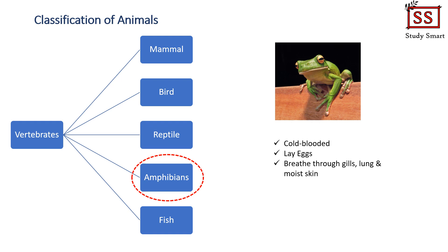Here we come to the last vertebrate type: amphibians. The most common example of amphibians is the frog. Most students tend to confuse amphibians and reptiles — I hope with the smart tip for reptiles, that confusion is now cleared up. Frogs are cold-blooded and they lay eggs. Their breathing method is quite unique: they breathe using gills when they are young, and use lungs or moist skin when they grow up.